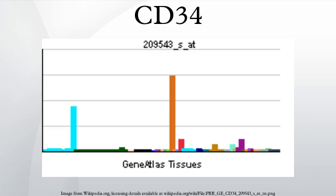Hematopoietic progenitor cell antigen CD34, also known as CD34 antigen, is a protein that in humans is encoded by the CD34 gene. CD34 is a cluster of differentiation, functioning as a cell surface glycoprotein and as a cell-cell adhesion factor. It may also mediate the attachment of stem cells to bone marrow extracellular matrix or directly to stromal cells.